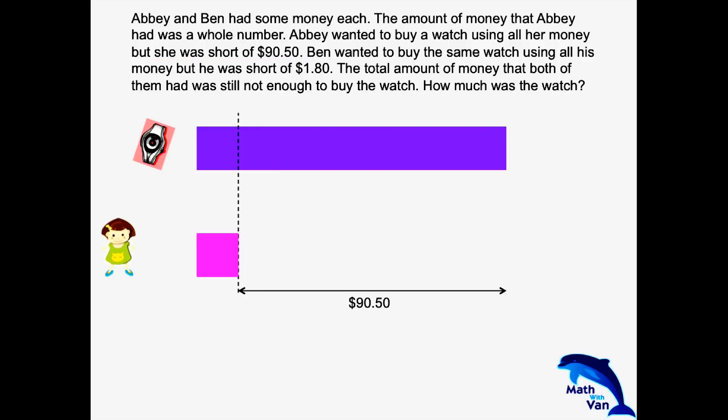Now this is something you may have to do differently. Usually we draw Ben's model separately, but in this case, since the question indicates that the total amount of money both of them had was still not enough to buy the watch, I will put Ben's money together with AB's. Usually we start from the left, but for this question I'm going to start from the right, bearing in mind that even adding Ben's money, they still do not have enough to buy the watch.